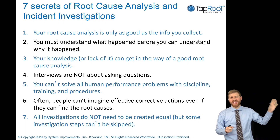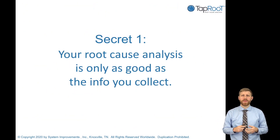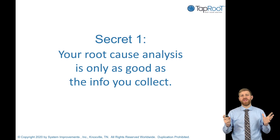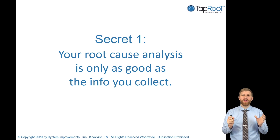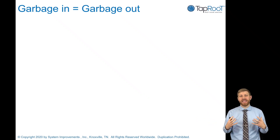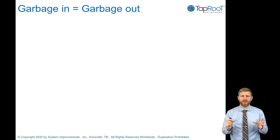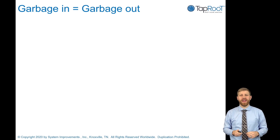Our fundamental mission became changing the way the world solves problems and providing people with the information and tools to do a really thorough investigation. What we're going to be talking about today are seven of the secrets we've learned over those 30 years for how to perform exceptional investigations and find root cause. Secret one: your root cause analysis is only as good as the info you collect. Essentially, garbage in equals garbage out.